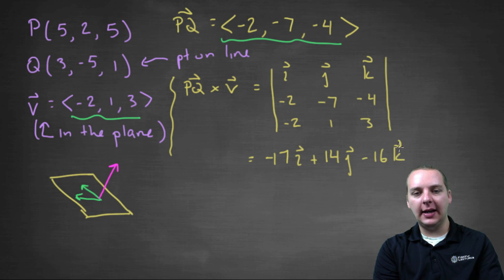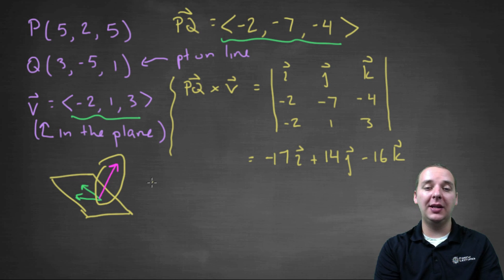And that guy is our normal vector to the plane, that was the one that was so difficult to find, and we found it. In the equation of the plane, this is going to be like our A, B, C normal vector for the plane. So we're pretty much done, just have to write down the final answer.